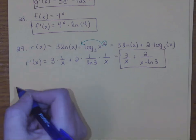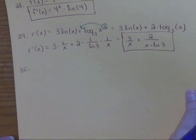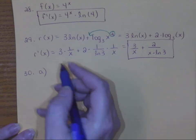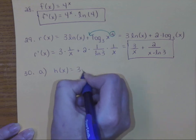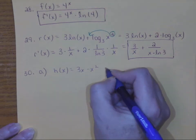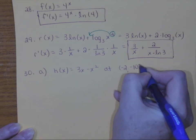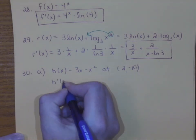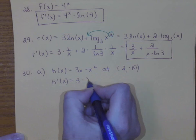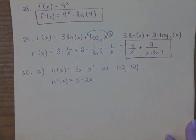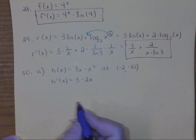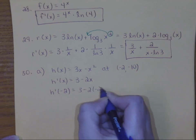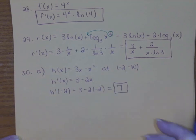Now the last few are application questions. Number 30 part a: find the slope of the tangent line to the graph of h of x equals 3x minus x squared at the point (negative 2, negative 10). The wording 'slope of the tangent' should automatically make you think you need to find the derivative. The derivative is 3 minus 2x. Notice it asks for the specific slope at this point, so plug in x equals negative 2 — you end up getting a slope of 7 at that particular point.